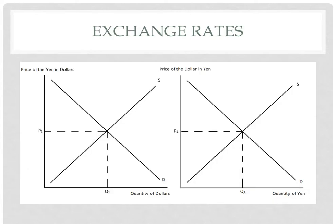The next thing you need to know is how international currency exchanges work. The graph for any given currency is like a regular supply and demand graph. Here we have the graph of the dollar on the right and the graph of the yen on the left. The demand for all currencies is downsloping because people want more of that currency at a cheaper price, and the supply is upsloping because people are more willing to supply their currency at a higher price. The x-axis is quantity, and the y-axis is the price of that currency in terms of the other. So the dollar graph has a y-axis showing the price of the dollar in yen, and the yen graph has a y-axis showing how many dollars per one yen.